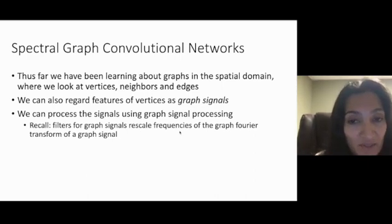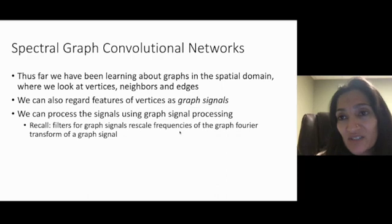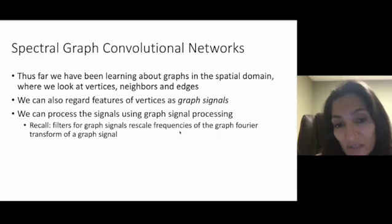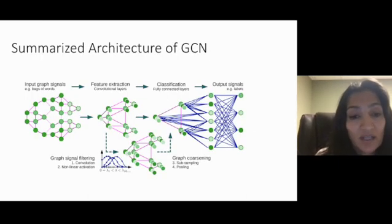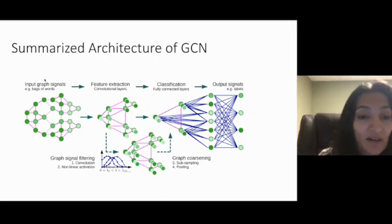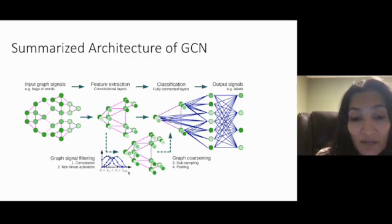Now, going to graph convolutional neural networks, these regard features on the vertices of a graph as graph signals, and it uses frequency domain graph filtering ideas to process these signals and come up with new features. Recall that the original construction of filters of graphs are a way of rescaling the Fourier coefficients you get when you take the graph Fourier transform of the signal. And so in this setup, what you have are the input graph, and then you look at all of the features, take their graph Fourier transform, and then you adjust the graph Fourier transform in some way using graph convolutional operations here, followed by nonlinear activations.